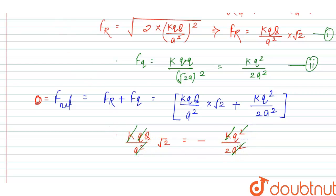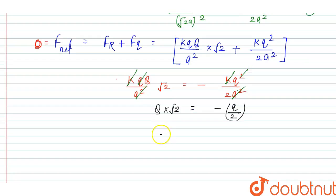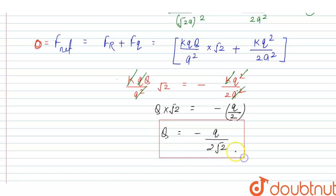After cancellation, we get capital Q times root 2 equals minus q divided by 2 root 2. This gives the required condition: capital Q equals minus q upon 2 root 2. This is the value of capital Q for which the net force on the small particle q is zero.